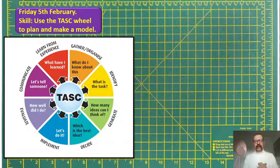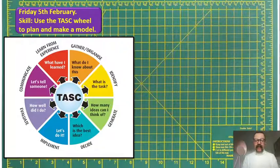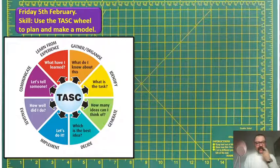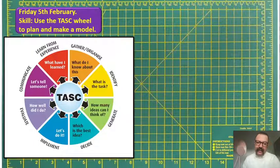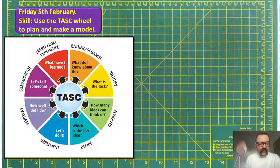Good afternoon, Year 5. Friday afternoon, the sun's in the sky as usual. Looking forward to the weekend, and we're going to start this afternoon by talking about the task wheel. This week and next week we are going to be focusing on some DT — design and technology.